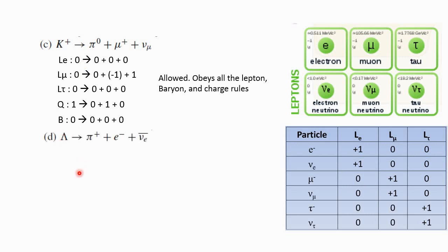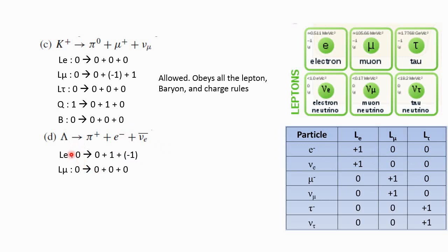Next, the decay of a lambda particle. It releases one electron and one anti-electron neutrino. For the lepton number: left-hand side is zero; right-hand side — electron has positive one lepton number and anti-electron neutrino has negative one lepton number. Adding everything on the left and right, the answer is zero on both sides. So lepton number is conserved.